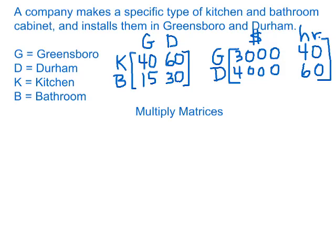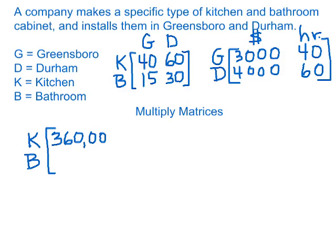Now let's think about multiplying these two matrices together. When you multiply matrices, you use the row labels from the left matrix (K and B) and the column labels from the right matrix. The first row times the first column is 40 × $3,000 + 60 × $4,000, which equals $360,000. The first row times the second column is 40 × 40 + 60 × 60, which equals 5,200.